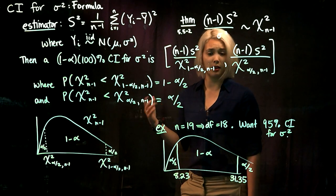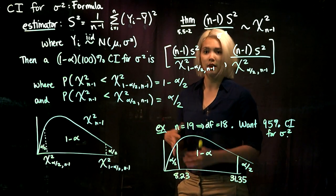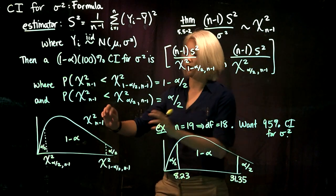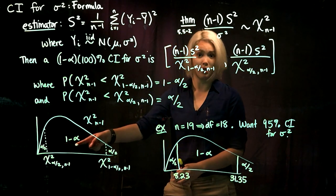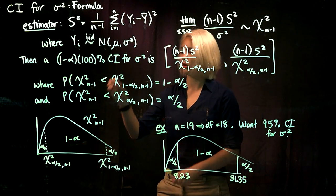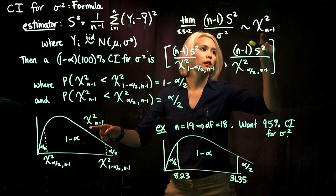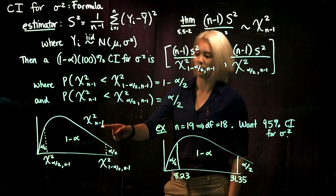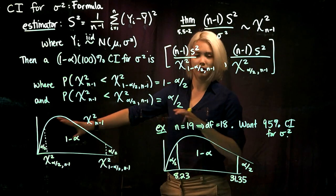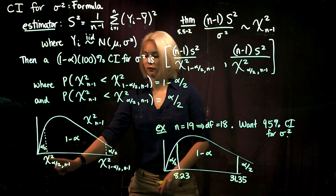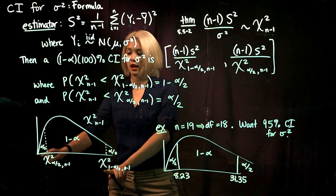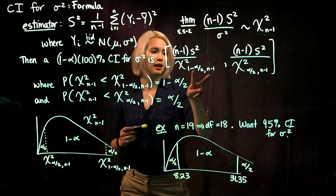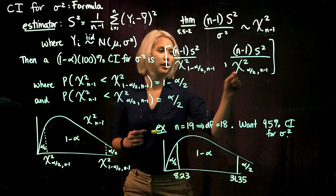Just like when we find a confidence interval for a mean, we go to the distribution used in our theorem and find the cut-offs that correspond to 1 minus alpha in the middle. Here it's exactly the same: we have chi-squared with n minus 1 degrees of freedom from our theorem, so we draw that distribution, put 1 minus alpha in the middle, split the remaining alpha evenly between the two tails, and find the quantiles that give alpha over 2 in each tail. That's how we get the two denominators in our interval.